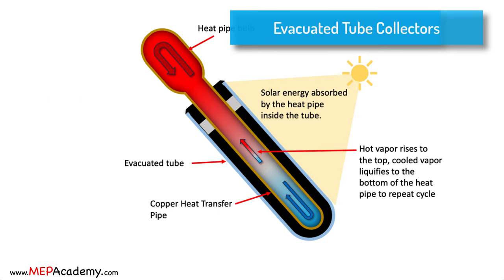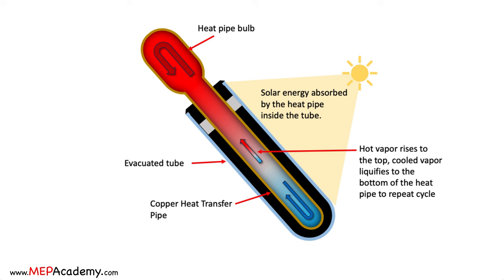Evacuated tube collectors consist of rows of glass tubes with an outer and inner tube. The air is evacuated from the space between the tubes to create a vacuum, reducing heat loss through conduction and convection. Like flat plate collectors, sunlight passes through the outer glass tube and strikes an absorber within the inner tube. The absorber transfers the heat to a fluid circulating within the tube. Evacuated tube collectors are more efficient than flat plate collectors, especially in colder climates. The vacuum insulation minimizes heat loss, allowing them to capture solar energy even on cloudy days.